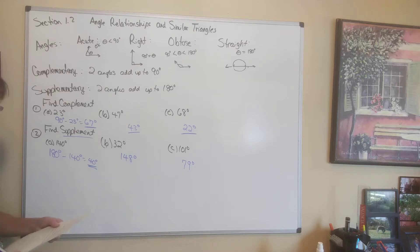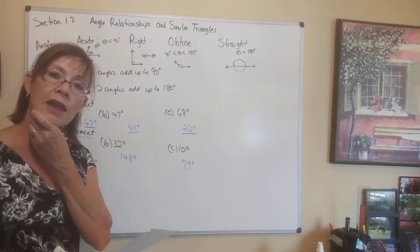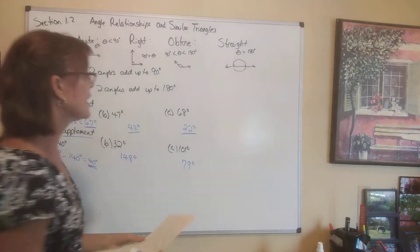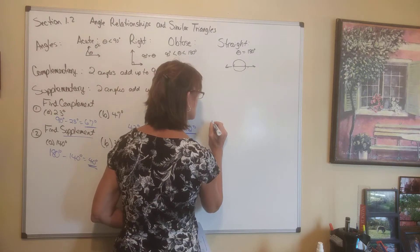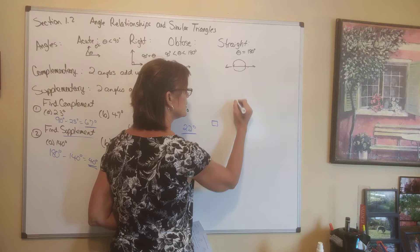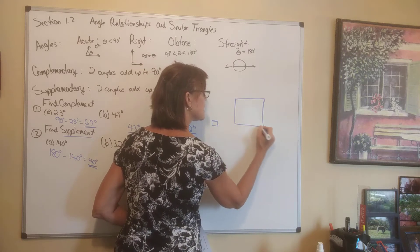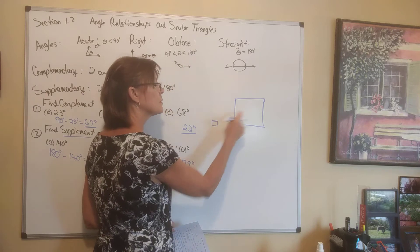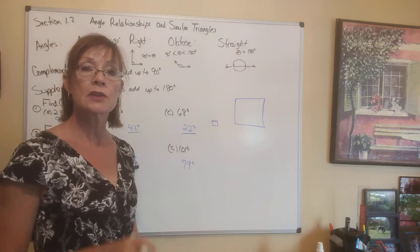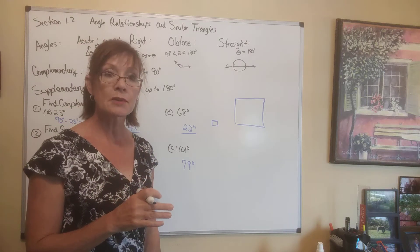Similar figures are figures that have the same shape but are different sizes. For example, you could have a small square and a larger square — same shape, different sizes. Those are similar figures. They don't have to be regular figures; they could be irregular, but they must be the same shape and different sizes.